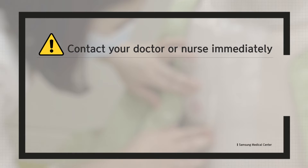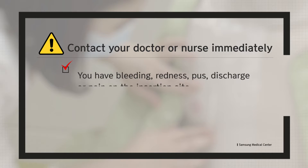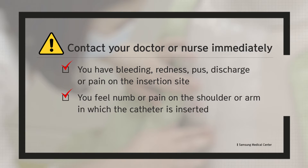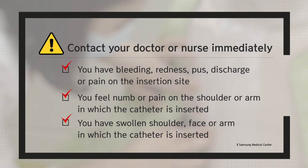There are symptoms that require notifying medical staff. If any of the following occur, please consult medical staff: bleeding, redness, pus, discharge, or pain on the insertion site; numbness or pain on the shoulder or arm where the catheter is inserted; or swelling of the shoulder, face, or arm where the catheter is inserted.